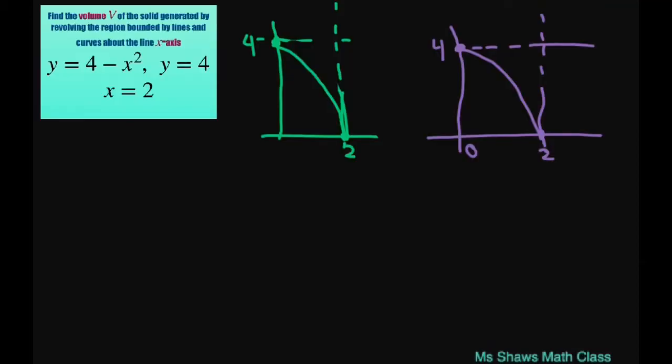Alright, so I've already sketched this. This is y equals 4 minus x squared. That means our y intercept is 4 and it opens down, and the zero occurs at x equals 2.